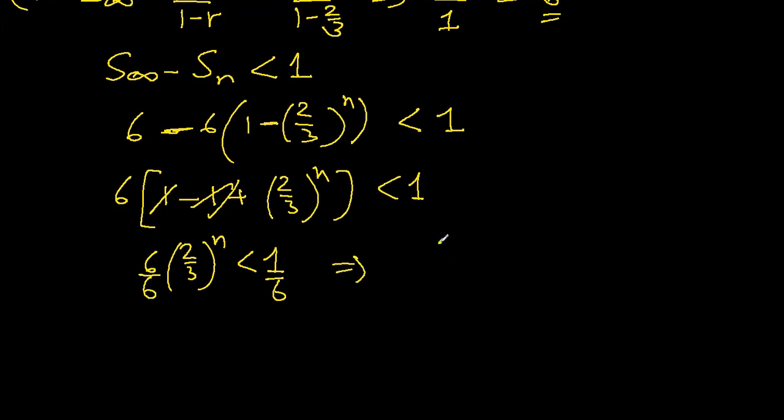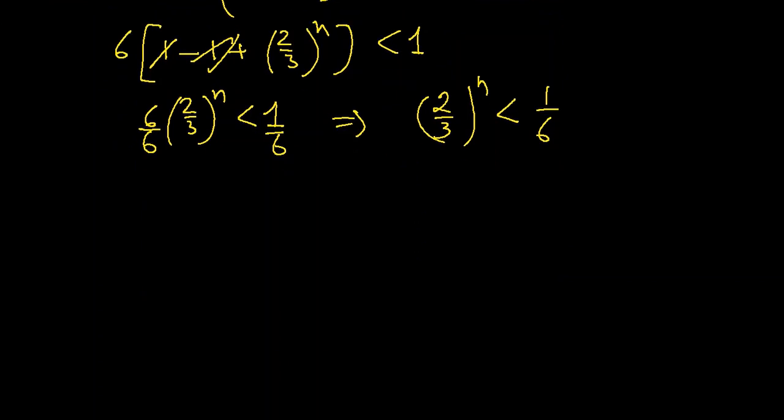So let's divide both sides by 6, so (2/3)^n is less than 1/6. Now let's take log of both sides.